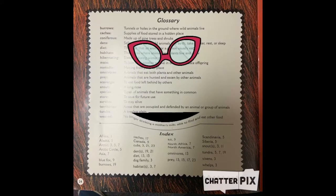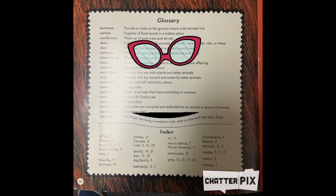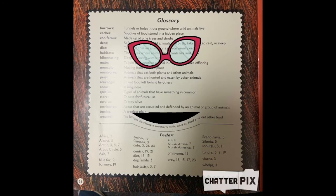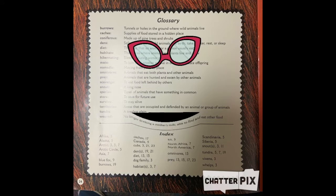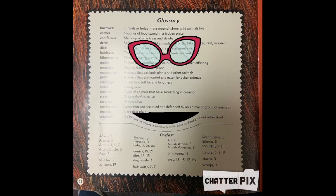I am the glossary and I have a very important job. I'm located at the end of the book. You can use me when you're trying to look for what a word might mean that you don't know the meaning of when you're reading. So if you come across a challenging word next time, flip to the back and look for me. I'm usually in alphabetical order and then you will know what the word means.